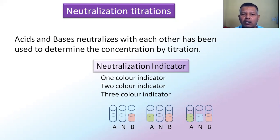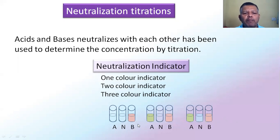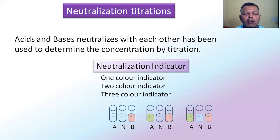In acid-base neutralization reactions, we use acid-base or neutralization indicators. Some are one-color indicators — meaning the indicator shows color in only one medium, either acidic, neutral, or basic. Some are two-color indicators — they show color in two phases and are colorless in one. Three-color indicators show a different color in each of the acidic, basic, and neutral phases. The color change depends on how much the indicator dissociates — that is, the degree of dissociation alpha.